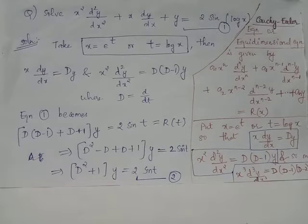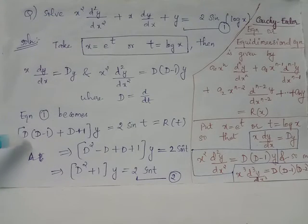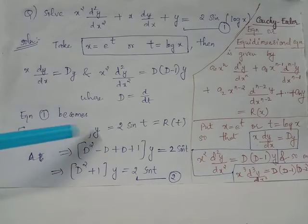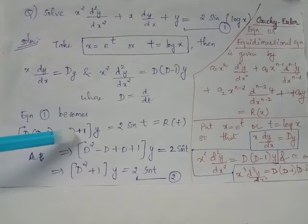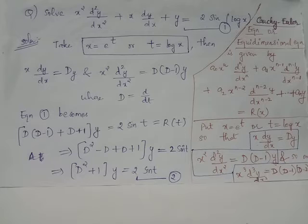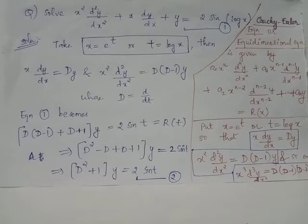Thus, the first term of equation 1 becomes D(D−1) acting on y, the second term becomes D acting on y, and the third term, which is independent of x, requires no modification. On the right-hand side, instead of log x, we write t, so the RHS becomes 2 sin t, a function of the independent variable t.